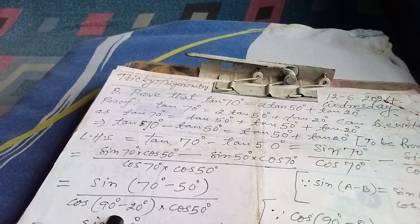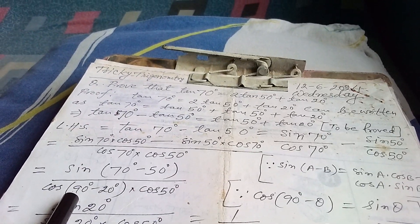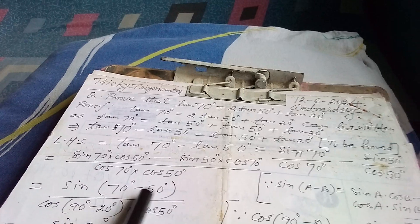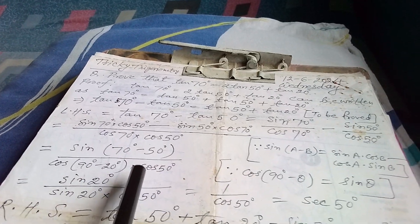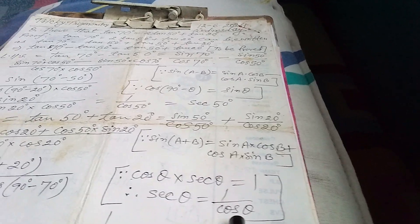So this can be written as sin(70°−50°) over cos70°·cos50°, which is sin20° over cos70°·cos50°. Now cos70° can be written as cos(90°−20°). You know the formula cos(90°−θ) = sinθ, so cos(90°−20°) = sin20°. So we have sin20° over sin20°·cos50°. sin20° cancels, leaving 1/cos50°. And 1/cos50° equals sec50°, since secθ = 1/cosθ. So LHS = sec50°.